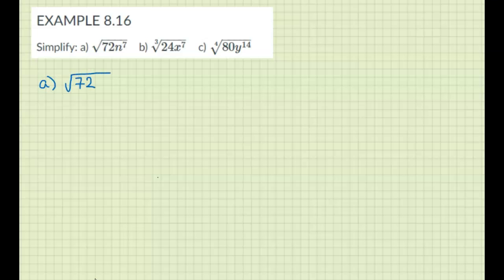I have square root of 72 n to the 7, so we're going to separate. We have square root of 72, then square root of n to the 7.